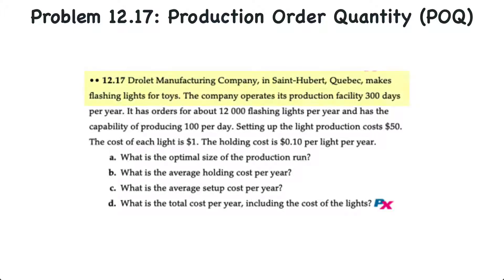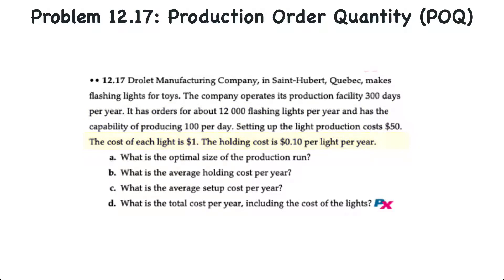Here we have a manufacturing company that makes flashlights for toys. The company operates in a production facility 300 days per year. It has orders for about 12,000 flashlights per year, and the capacity of producing 100 per day. Setting up the light production costs $50, and the cost of each light is $1. The holding cost is $0.10 per light per year.